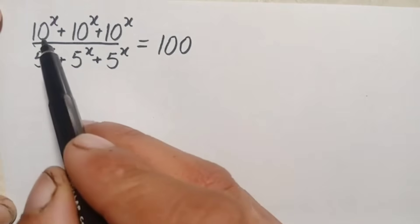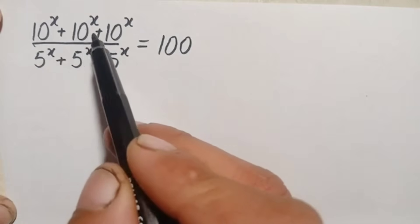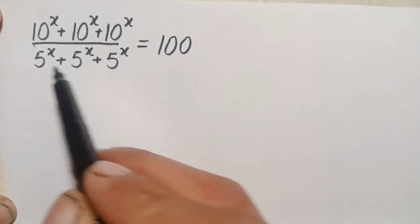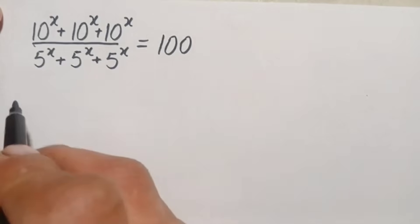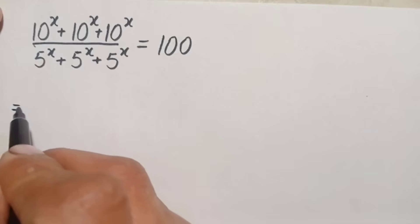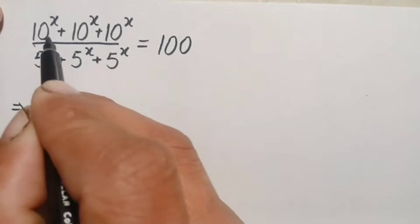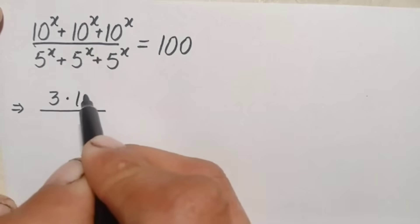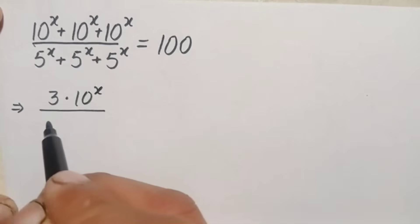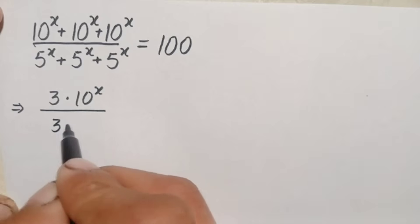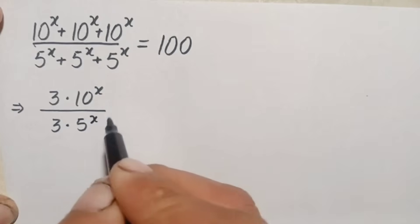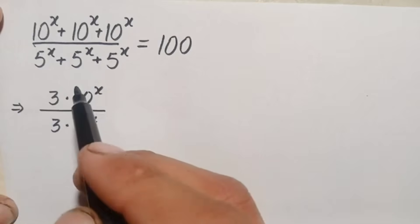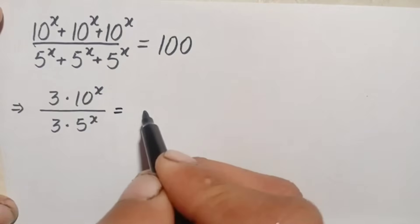Looking at the left hand side, in the numerator this number 10 raised to power x is added three times, and in the denominator this number 5 raised to power x is added three times. So we can write the numerator as three times 10 raised to power x, and the denominator as three times 5 raised to power x. We can take these common from numerator and denominator. This is equal to 100.